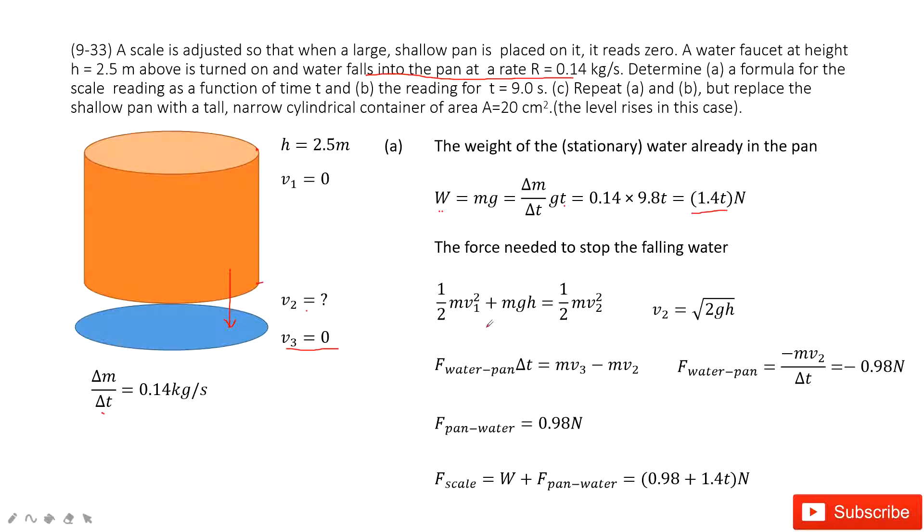This one is concerned with energy conservation. Initial energy is equal to final energy, so we can get v₂ is √(2gh). v₂ is obtained. Now can you find the force to stop the pan?